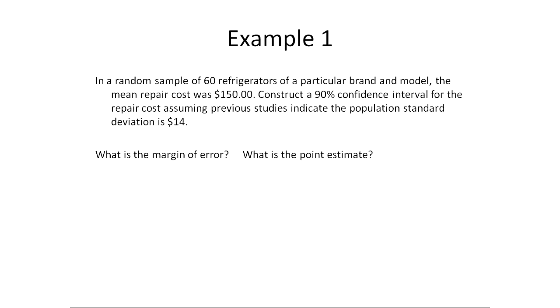In this example, we can see that we're trying to estimate the repair cost. We're told we have a random sample of 60 refrigerators of a particular brand and model, and the mean for that 60 was $150, the mean repair cost. So what we want is a 90% confidence interval for the repair cost, assuming we happen to know the population standard deviation is 14.